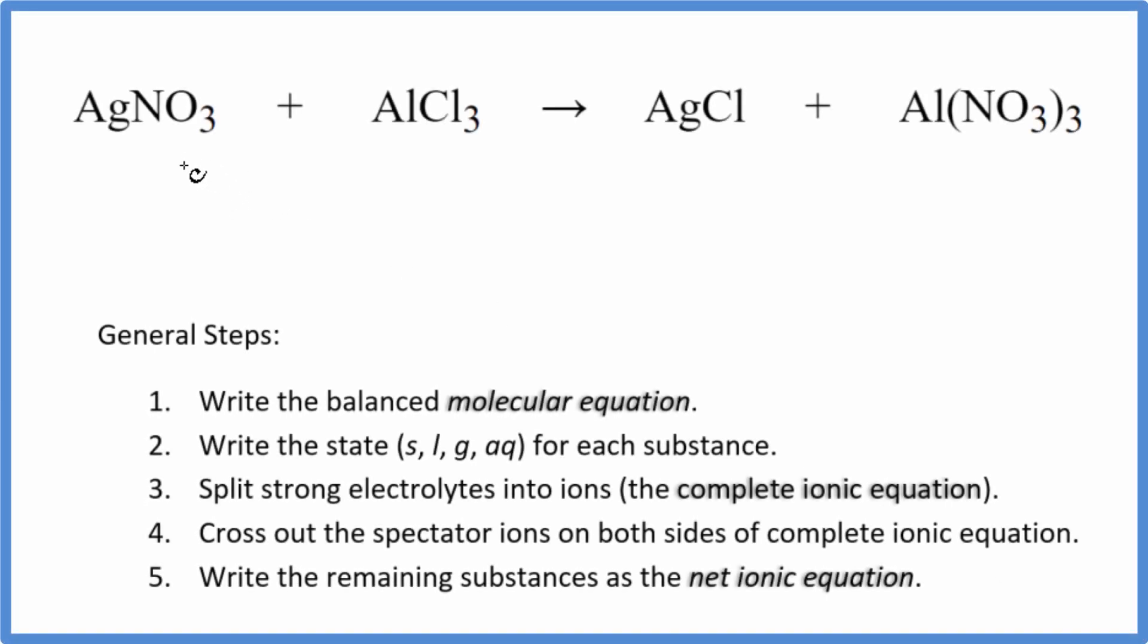In this video, we'll balance the net ionic equation for AgNO3 plus AlCl3. This is silver nitrate and this is aluminum chloride.